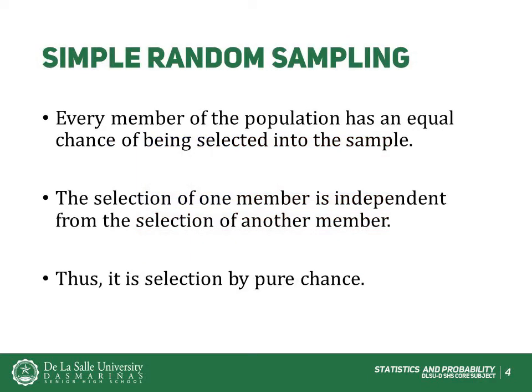As you might imagine, it is very easy for a sample to be biased. Thus, there are strategies that researchers adopt in an attempt to eliminate or decrease the bias in their sample. One of these strategies is the use of simple random sampling.